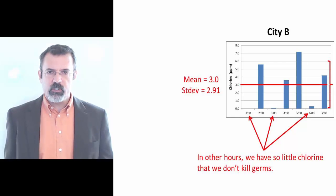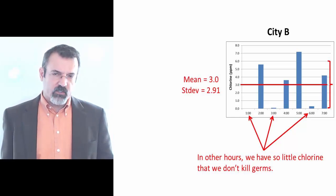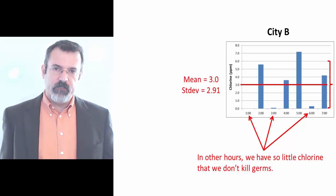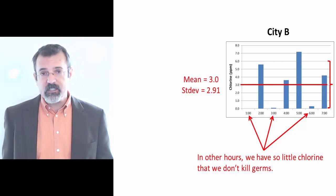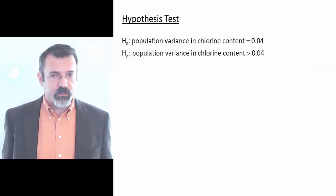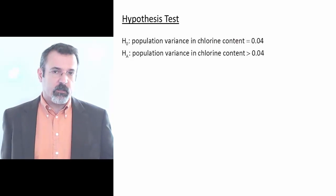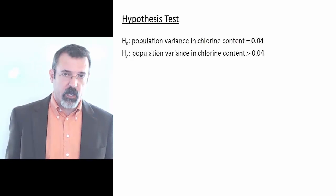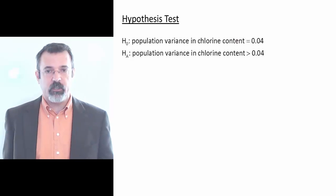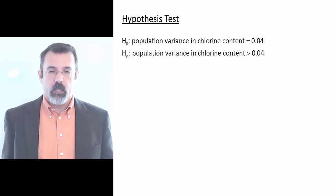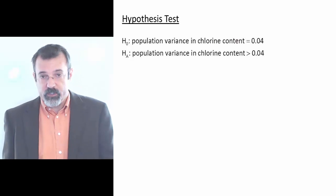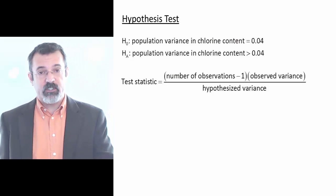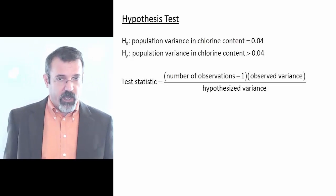Standard deviation measures consistency. Suppose our goal is not simply three parts per million on average, but also that the variance of the chlorine in the water does not exceed 0.04. We can conduct a hypothesis test. The null hypothesis is that the population variance equals 0.04, and the alternative hypothesis is that the population variance exceeds 0.04. To test variance, we construct a test statistic equal to the number of observations minus 1, times the observed variance, divided by the hypothesized variance.